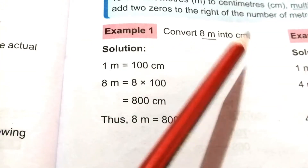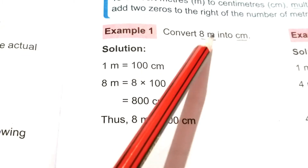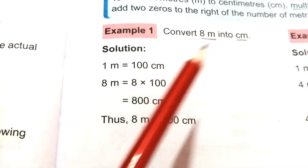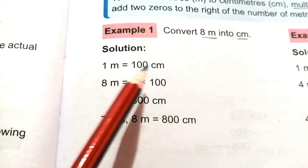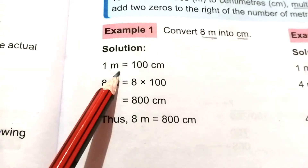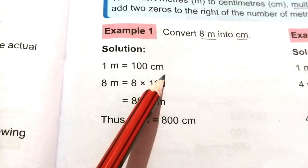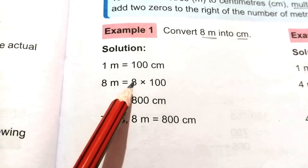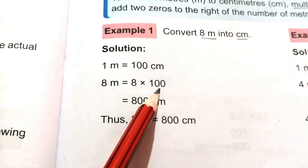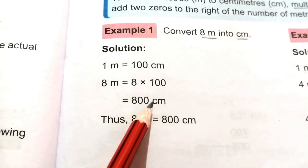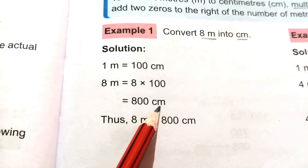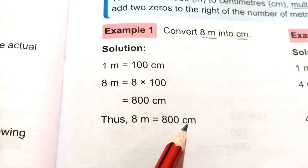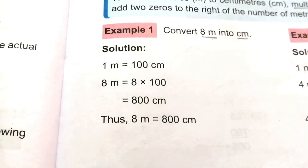Example 1: Convert 8 meters into centimeters. We are converting a bigger unit into a smaller unit. The relation is 1 meter equals 100 centimeters. Therefore, 8 meters equals 8 × 100 = 800 centimeters.